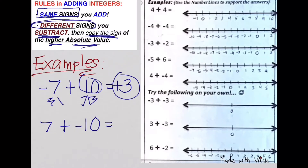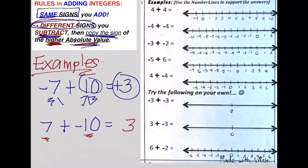Here's another example: positive 7 plus negative 10. There are different signs, so we have to subtract them. The difference between 10 and 7 is 3. But whose sign do I copy? Still the one of higher absolute value or farther from 0 — that's 10 spaces away from 0, which happens to have a negative sign. So copy that sign on your final answer.